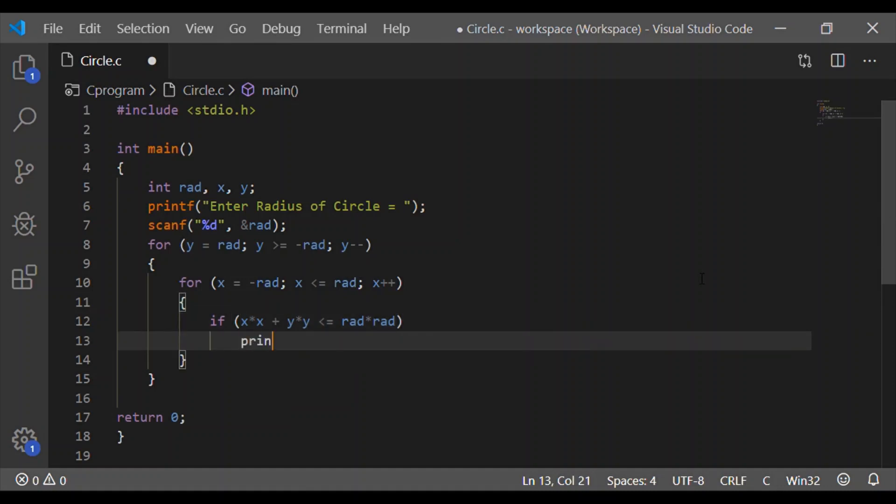In case if the condition is satisfied, that is x squared plus y squared is less than the radius squared, then let me print two stars. I am doing two stars so that the length and width are getting adjusted to print in the terminal.